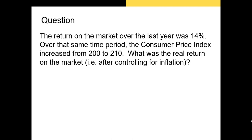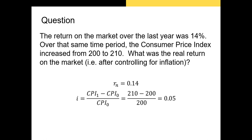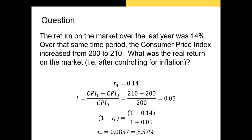Let's try another question going from a nominal rate to a real rate. The return on the market over the last year was 14%. Over that same period, the CPI increased from 200 to 210. What was the real return after controlling for inflation? We know the nominal rate is 14%. To get our inflation factor, we take the percentage change in CPI: 210 minus 200, all divided by 200, giving us a 5% inflation rate. Plugging that into the Fisher equation gives us a real return of 8.57%.